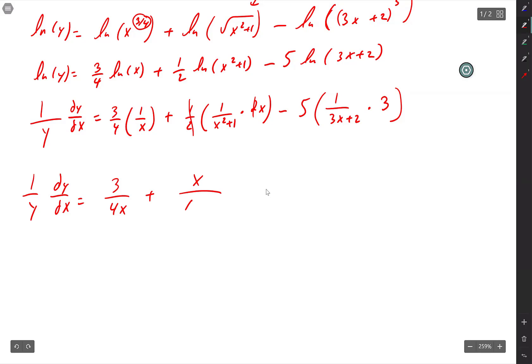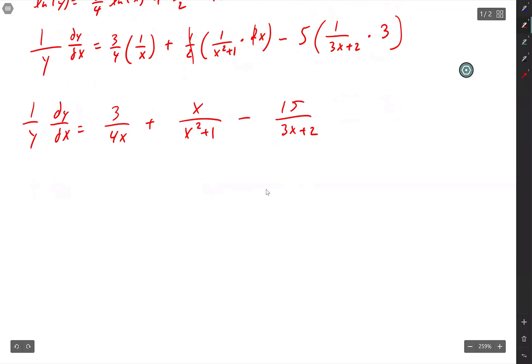X over x squared plus 1. Don't, don't, don't, don't cancel anything there. Minus, and then 5 times 3 is 15. So 15 over 3x plus 2. All right. I'm going to get rid of that y there. So times y times y. So we are almost done. dy/dx equals y times all of this.